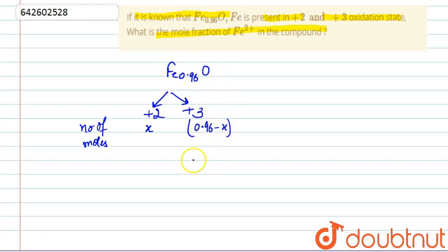So let us balance the charge. It will be 2 into x plus 3 into 0.96 minus x minus the oxidation state of O is minus 2 as always and equals 0 because it is a neutral compound.